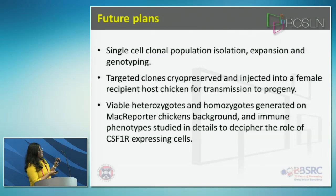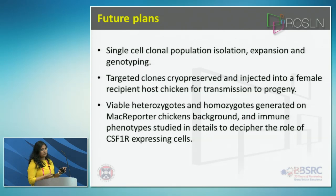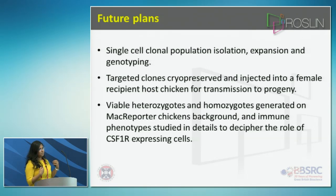Future plans involve growing a single-cell clonal population, their expansion, and genotyping to confirm the deletion in those cells. Then, after cryopreserving the cells, I will inject them into a female recipient host chicken for transmission of the edited genome into the progeny. I will then breed these chickens to obtain a viable population of homozygotes and heterozygotes, performed against the background of mac-reporter chickens. Once we obtain the offspring, I'll perform immune phenotype-related studies.